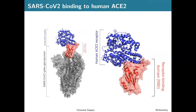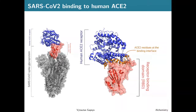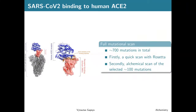Looking more closely at the interaction interface, there is a well-defined interface: mainly from the human ACE2 receptor side, one helix interacts with the RBD. If we color all of those interface residues using a distance criterion from the RBD, they are quite localized. Now, scanning all of those residues and trying out all potential mutations would result in something like 700 mutations in total — possible by alchemical calculations, but it would take a long time.